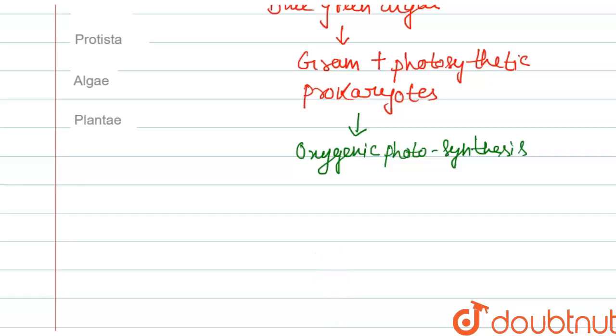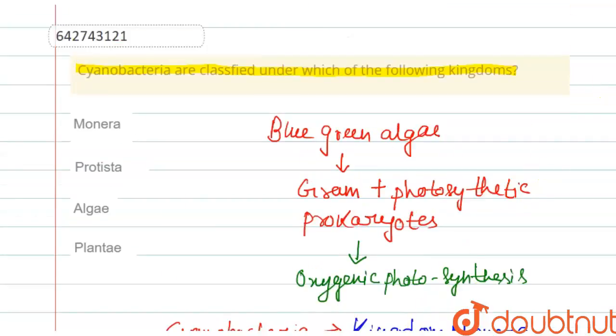The kingdom in which gram-positive photosynthetic prokaryotes, that is cyanobacteria, are classified is named Monera. In this kingdom, all the prokaryotes are classified, while other kingdoms are eukaryotes.